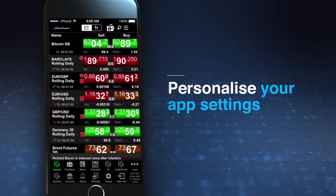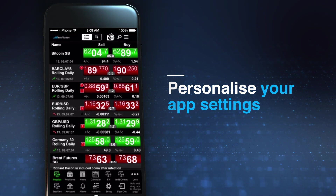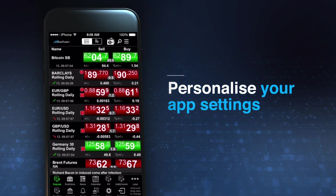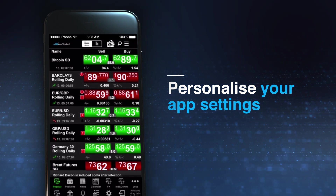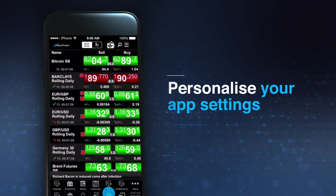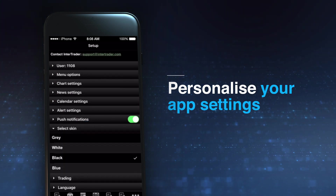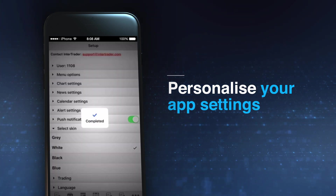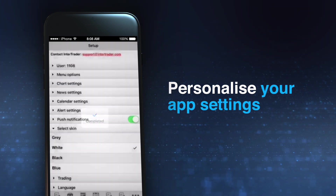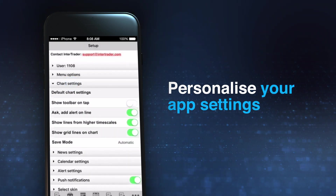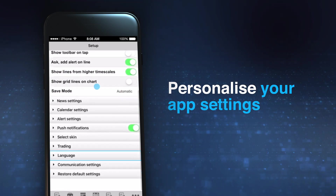Finally, you can customise and save your chart and app settings. For example, from the Setup menu, you can change the app's colour scheme, modify the look of charts or change the language used in the app.